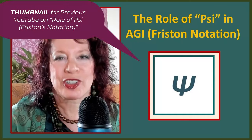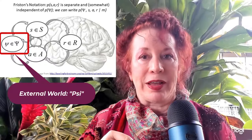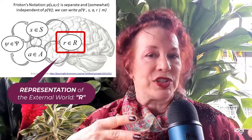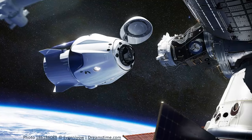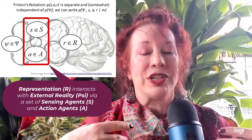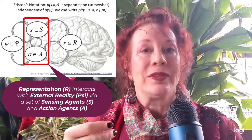Let's review the fundamentals. We have an external reality that, using Friston's notation from the previous YouTube, we're calling psi — P-S-I, the Greek trident-shaped capital letter. That's our external world. We have a representation of the external world that is constantly being updated. We're talking in a Fristonian sense, working our way towards active inference. The representation is interacting with that external reality psi via agents that both take information in — sensing agents — and act upon the environment — action agents.